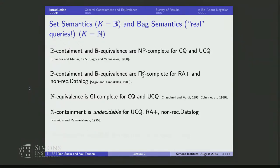Containment under bag semantics for conjunctive queries is open — an annoyingly open problem. Some people have gotten to the bottom of it and still haven't solved it. Kiron and collaborators have shown it's undecidable for conjunctive queries with inequalities, and together with Mahmoud and Hong and Dan they have a paper showing it's equivalent to hard problems in information theory.